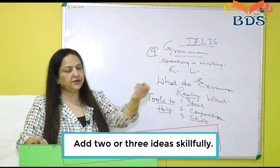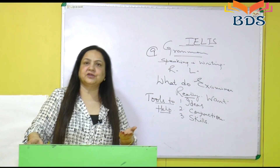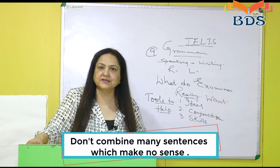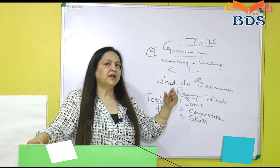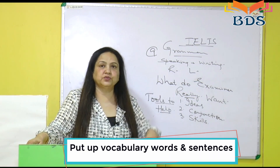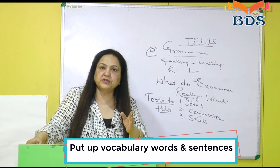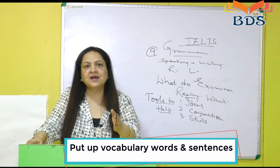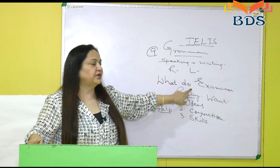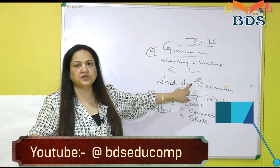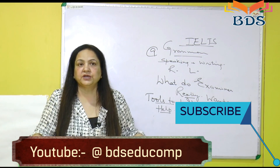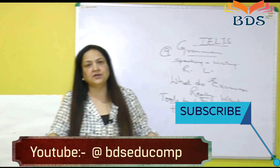Ek tense mein chal rahe ho to seedha chalte raho — maintain a timeline. Kabhi past aata hai, kabhi present — that is how you have to do it. For writing, there is a set of vocabulary words I discussed in my last video related to Task 2. Put up those words and sentences — the words themselves will help you make complex sentences. Give the examiner what he wants and he will give you what you want. Is it clear? Thank you so much, take care, God bless you.